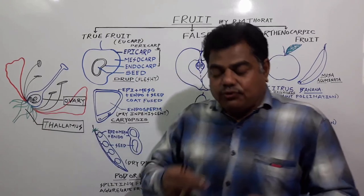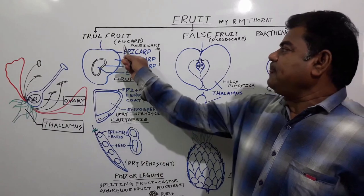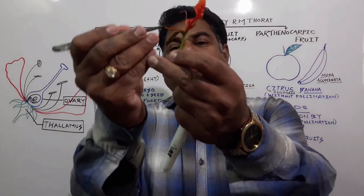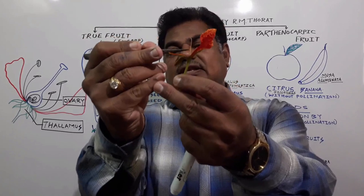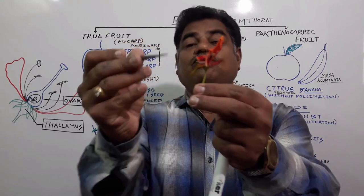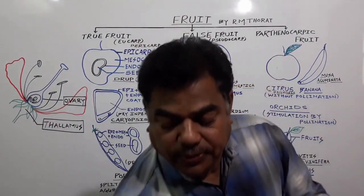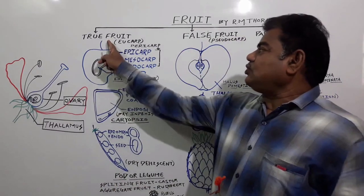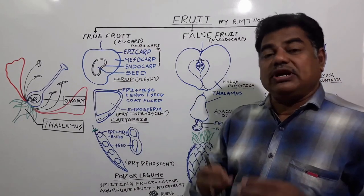If fruit formation takes place from the ovary, such a fruit we call a true fruit, also known as a eucarpic fruit. In the case of this flower, the female reproductive organ — the gynoecium — after fertilization gets converted into fruit. Such type of fruit formation takes place from the ovary only. Such a fruit we call a true fruit or eucarpic fruit. The majority of plants show this type of fruit.